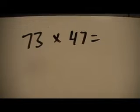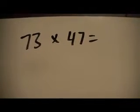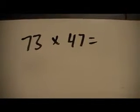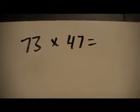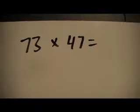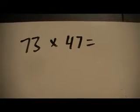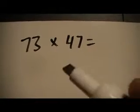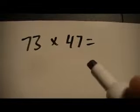This is actually a great strategy, especially when dealing with double digit by double digit or triple digit by double digit. But once you go past that, the strategy starts to get pretty inefficient, as you'll see.